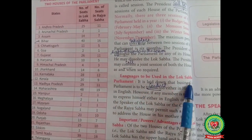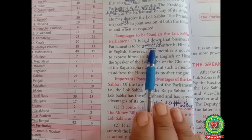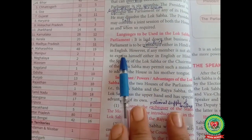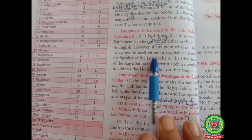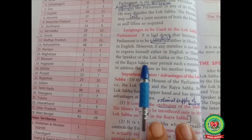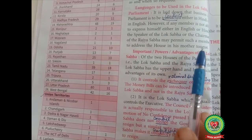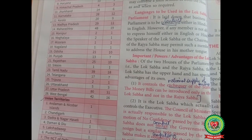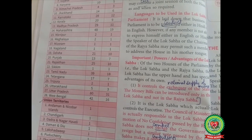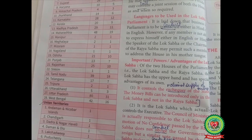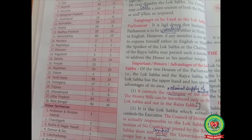Languages to be used in the Lok Sabha. Under Article 120 of the constitution, it is laid down that the business of parliament is to be transacted (conducted) either in Hindi or English. However, if any member is not able to express himself in either language, the speaker of the Lok Sabha or the chairman of the Rajya Sabha may permit such a member to address the house in his mother tongue.